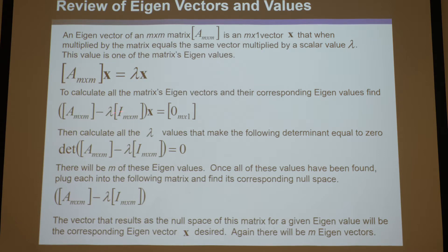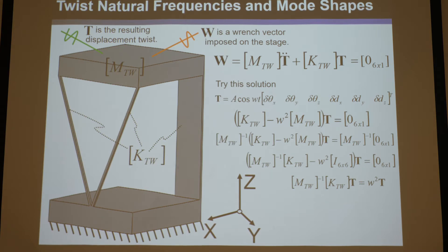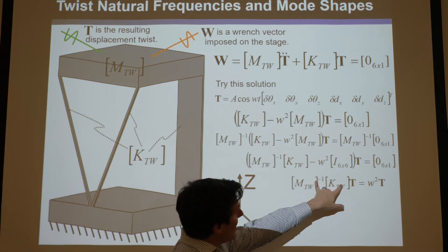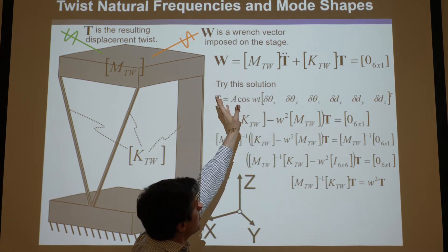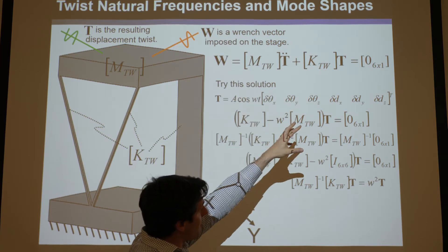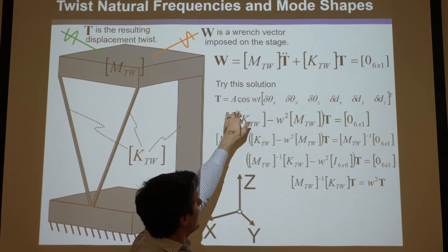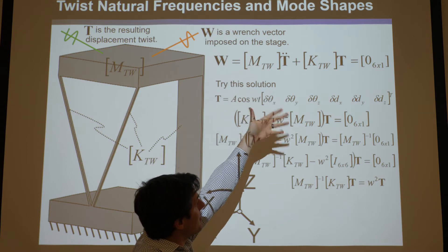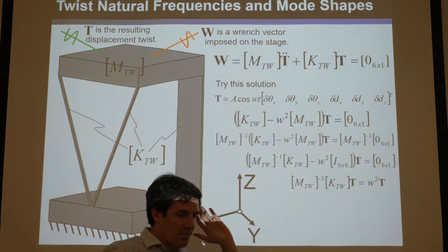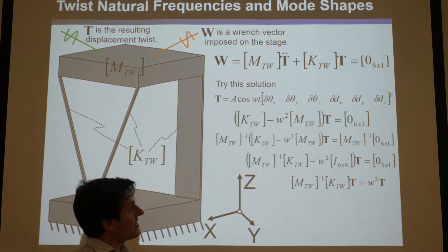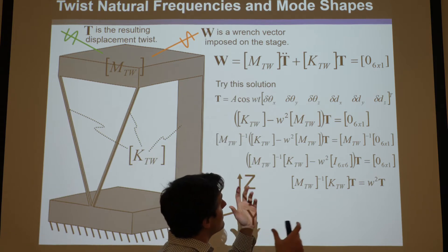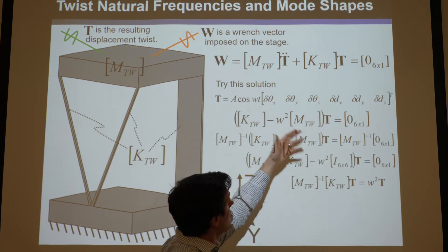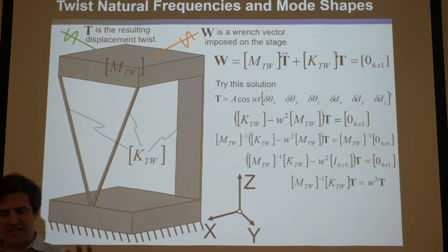Let's go back to this equation here — you might see a similarity. Remember, what we did is we took Newton's equation, set it equal to zero, and plugged in a guess that would satisfy it, just like we did in the previous proof. We're trying to find the condition that satisfies this for no load, and therefore find the natural frequencies and corresponding mode shapes.